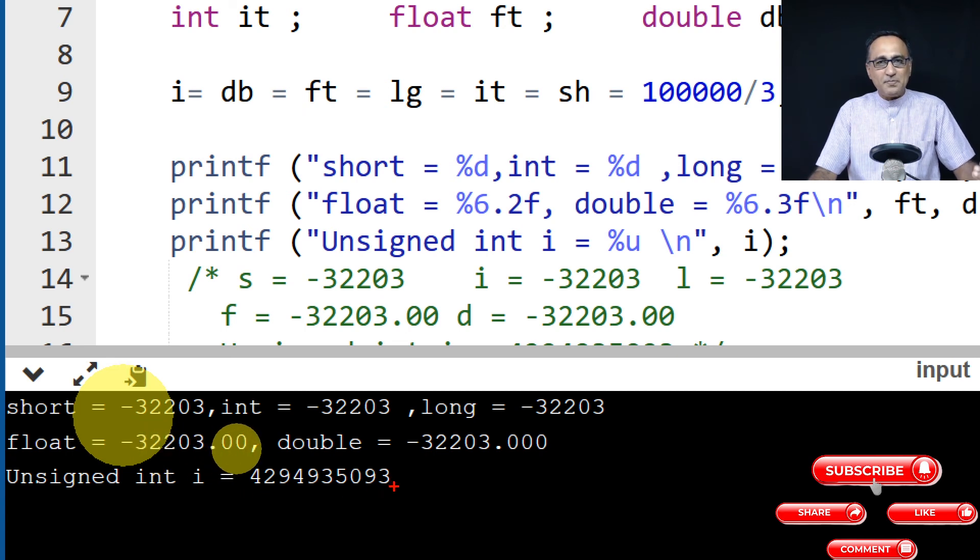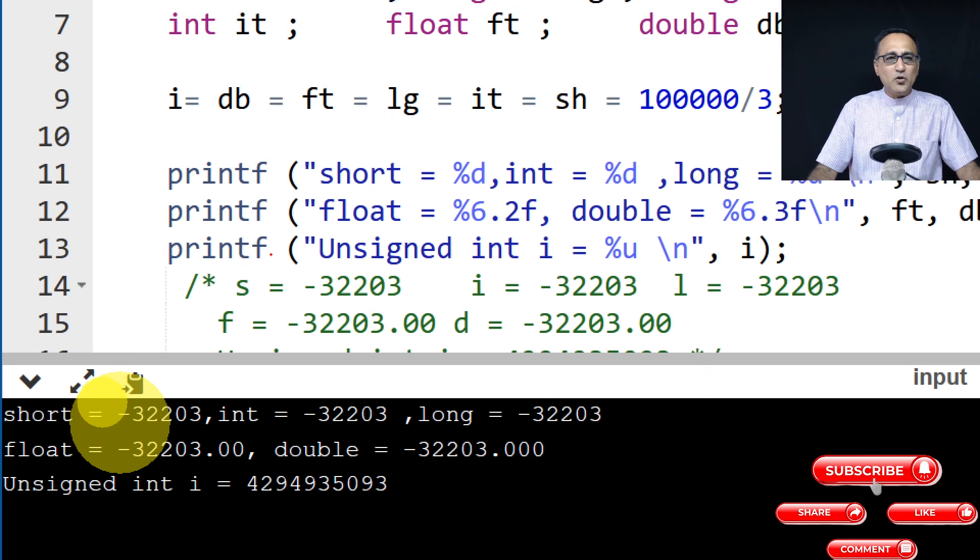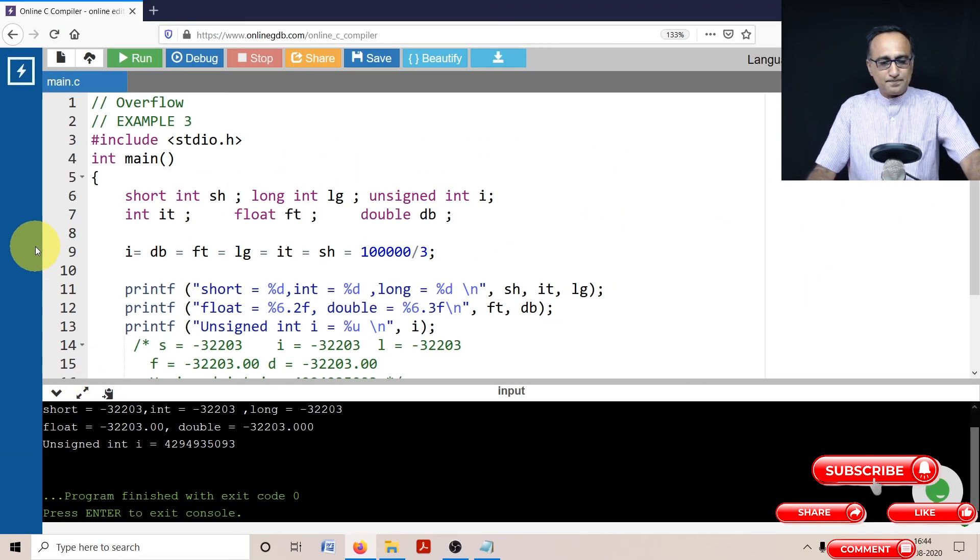So whether you run this on my PC or on this particular machine, you would have got the same result. So I hope this clarifies what happens if an overflow happens. And if you're not cautious with your arithmetic operations, then it can lead to unpredictable results. So please exercise caution when you go about trying to do arithmetic on C programming.